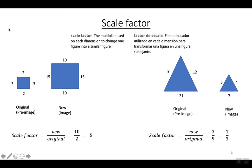Now to make the polygon bigger or smaller, you're going to multiply all the sides by a scale factor. The scale factor is the multiplier used on each dimension to change one figure into a similar figure.